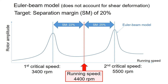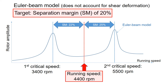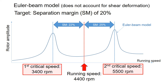Let's say you have a machine that is running constantly at 4,400 rpm and you are trying to have at least 20% separation margin from the first and second critical speeds. Note that 20% separation margin is a typical target when designing turbomachinery.